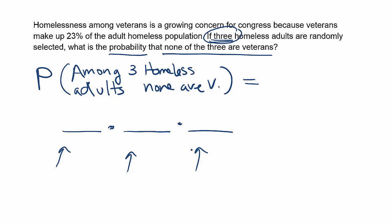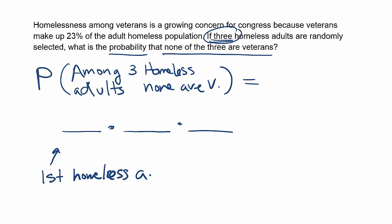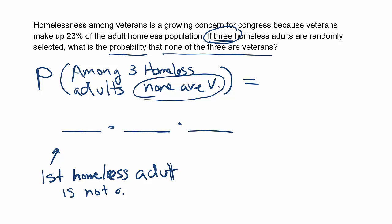I want to look at those fractions and ask: what does that represent in the problem? Well, that's the act of selecting the first homeless adult. You have to think about what's actually happening in the real world here. We select the first homeless adult, and then we determine that they are either a veteran or not. In this problem, we want them to be not a veteran, because it says none of them are veterans. So we write: first homeless adult is not a veteran.